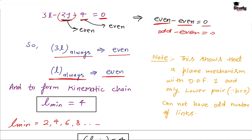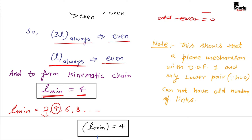If we want to form a kinematic chain, then we select a minimum of 4 links, because by choosing only 2 links we cannot form a kinematic chain. So the minimum number of links to form a kinematic chain is 4, i.e., l minimum equals to 4.